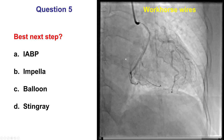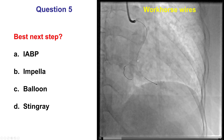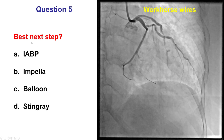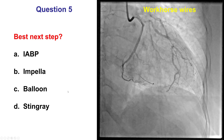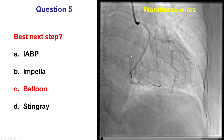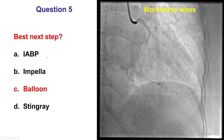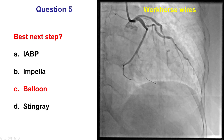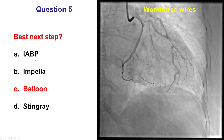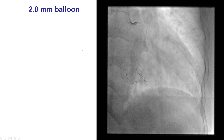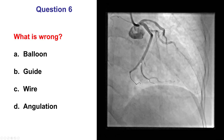Our initial plan was to perform mini-crush. We inserted two workhorse guide wires in the distal circumflex and OM2, but after wiring there was loss of antegrade flow. The next best step options were balloon pump, Impella, balloon, or a Stingray system. The answer is a balloon. Since we used a workhorse wire, the concern for dissection is low, and this is a small vessel unlikely to cause hemodynamic compromise. No support devices or reentry systems are needed. We inserted a 2.0 mm balloon and performed a brief inflation, which was enough to restore antegrade flow into the vessel.